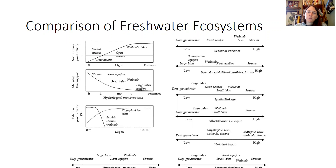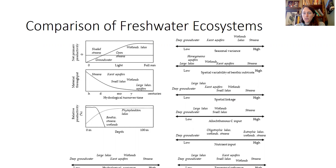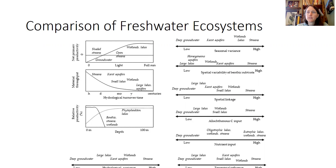Nutrient input is low for groundwater, medium for lakes, wetlands, and streams — especially oligotrophic systems — and high for eutrophic lakes, wetlands, and streams. Terrestrial influence is low for groundwater and high for streams. Hydrological variance is low for groundwater, middle for lakes, and high for streams. We see these kinds of patterns over and over again when comparing different types of ecosystems.